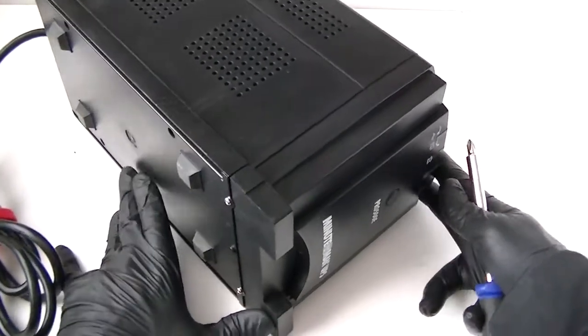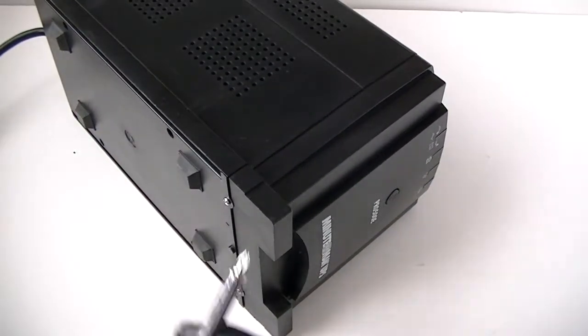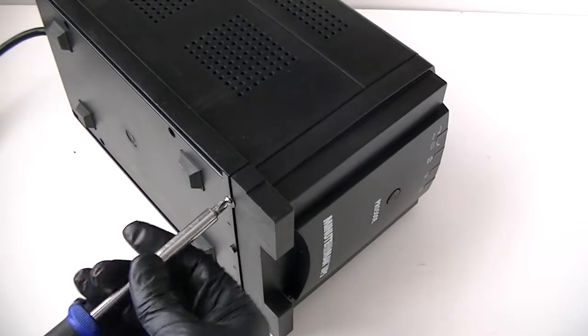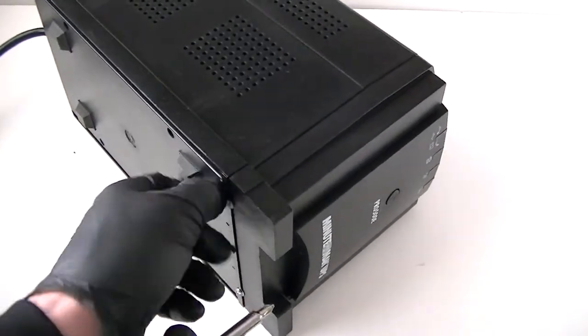You're going to turn it over here. There's going to be two screws right here. We'll use the Phillips screwdriver. Remove the two screws, one right here in the top and one at the bottom.